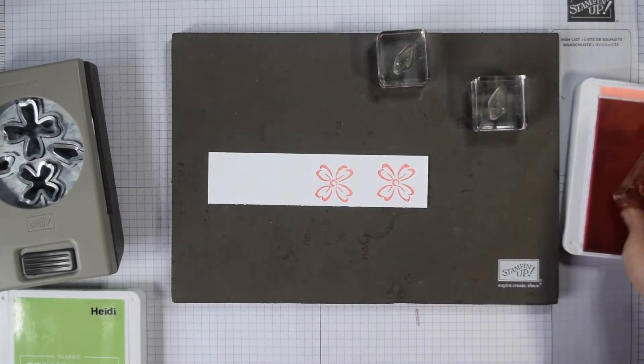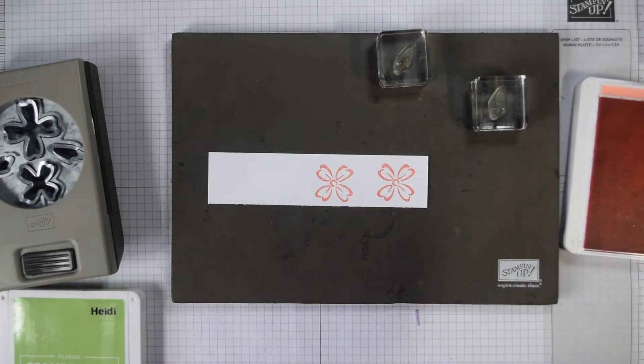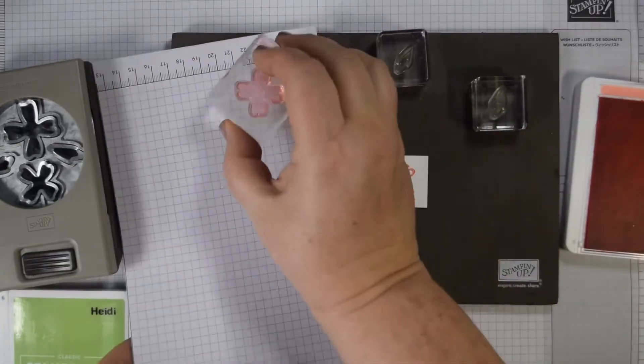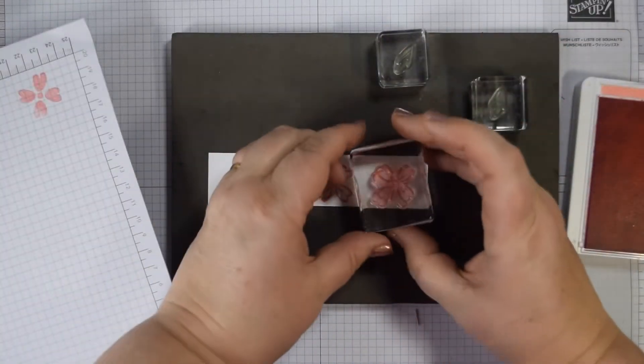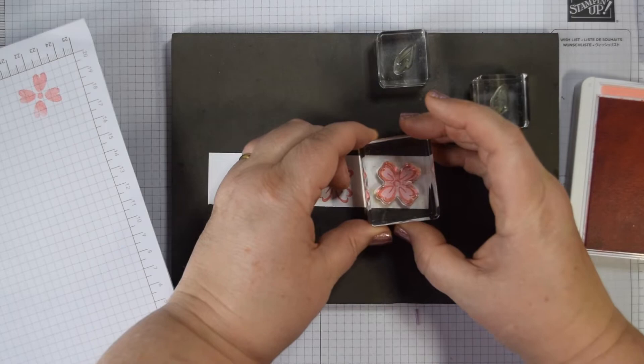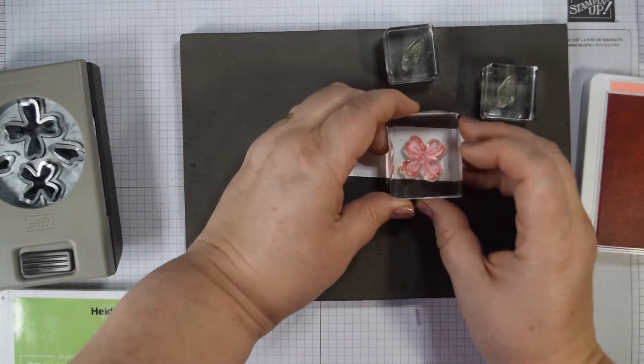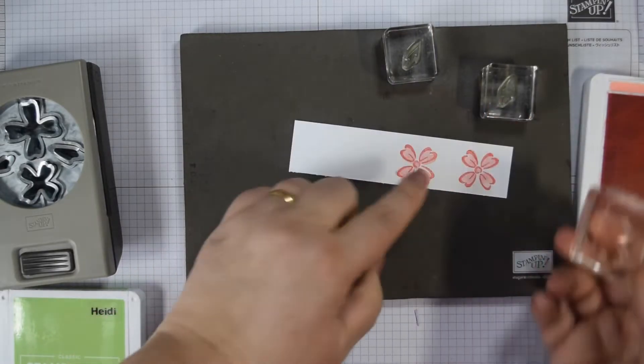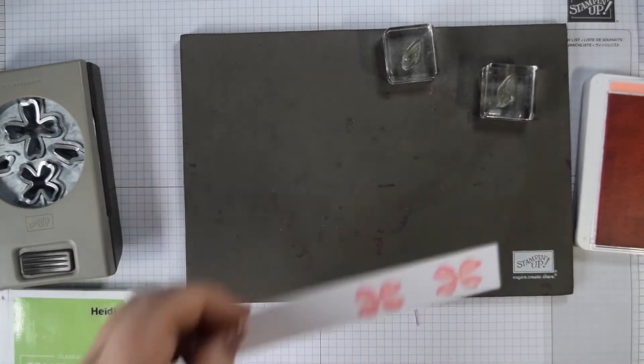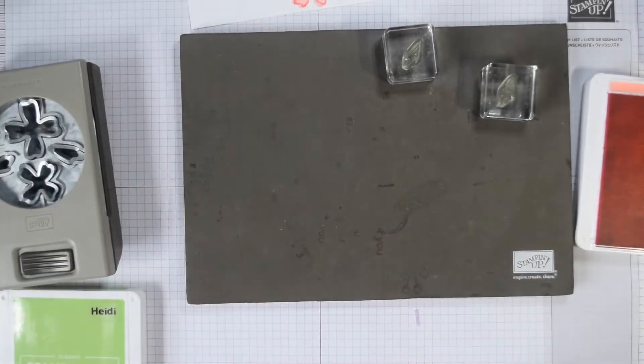Now for the infill, you're not going to want to do it full strength because you want to get a slightly lighter shade. Just stamp off and then line that up. I'm just using a scrap, as you can see. It doesn't matter which way around that goes. I haven't quite lined it up. It doesn't matter.